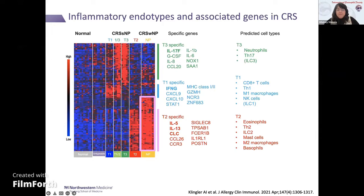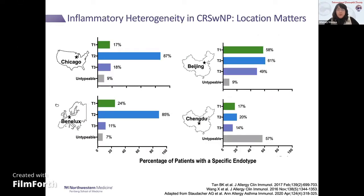Patients with nasal polyps show high upregulation of type 2 associated genes across the board, including CLC, IL-5, and IL-13, suggesting a type 2 inflammatory endotype — at least in Chicago. This type 2 inflammatory endotype is clearly seen in Western societies like the US and Europe. But interestingly, in China, you don't see as strong a type 2 endotype; it's much more of a mix and not as eosinophilic. However, over the past 10 years, there has been an increase in the type 2 endotype in Asian countries.